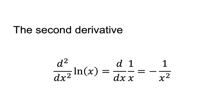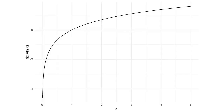The second derivative of the logarithmic function is d squared/dx squared of ln x, equals d/dx of 1/x, equals minus 1 on x squared. This second derivative is negative for all values of x for which ln x is defined. This implies that ln x is increasing at a decreasing rate — the function is concave. You can see that ln x is increasing at a decreasing rate in this plot.